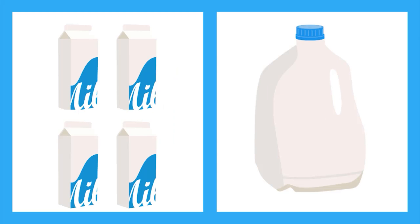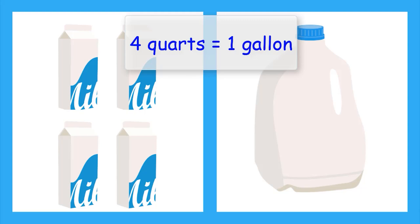Now let's compare quarts to gallons. There are four quarts in one gallon, so we can say four quarts is equal to one gallon. I use a little trick to remember this one: quart sounds like quarter, and a quarter is one fourth. So there are four quarts in one gallon.